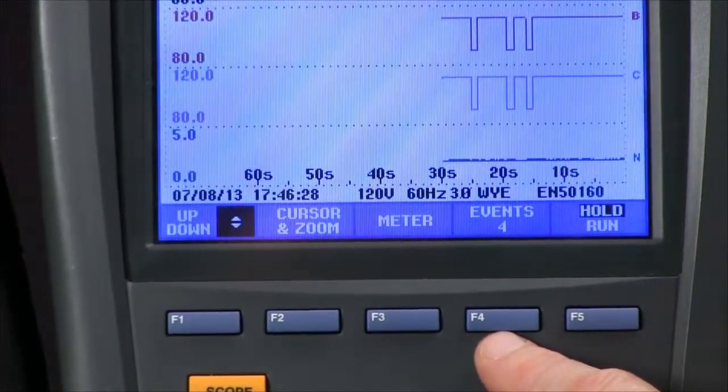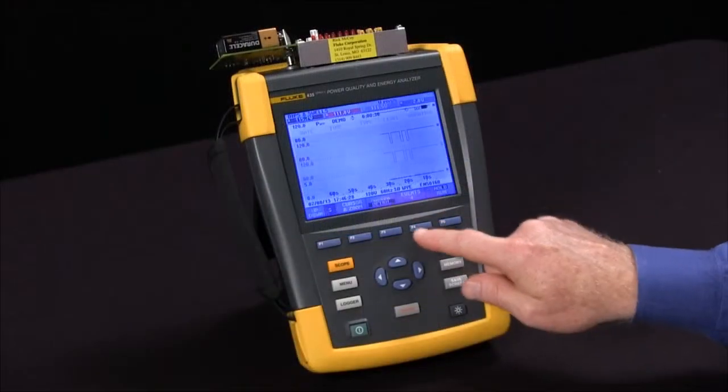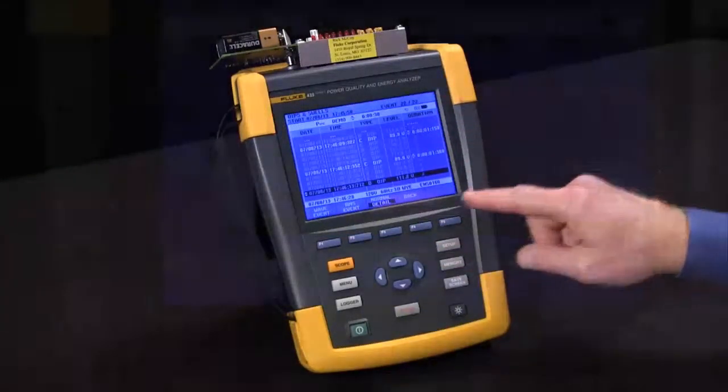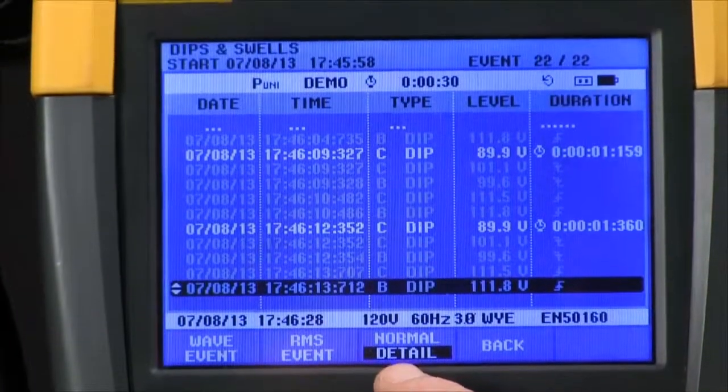To analyze, we hit the F4 button to look at the events. Now we can see a listing of everything that was captured. This is a detailed screen right now.